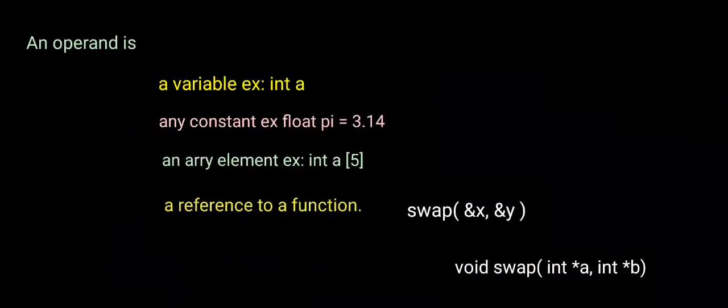An operand in a language concept can be a variable, any constant value, an array element, or a reference to a function. For example, if a variable is declared as int a, then a is the operand. A constant value such as float 5 equal to 3.14 — here 3.14 is the constant operand.